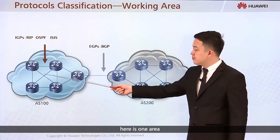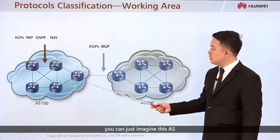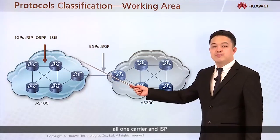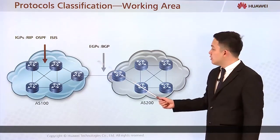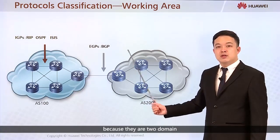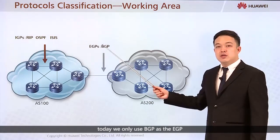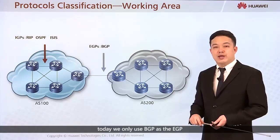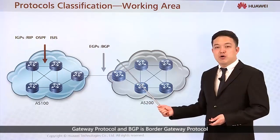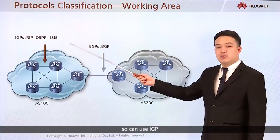Here we have one area — this is Autonomous System 100, and another AS 200. You can imagine each AS is one operator, carrier, or ISP. Between them, because there are two different domains, this is a large scope. Between the large scope, we should use EGP. Today we only use BGP as the EGP — External Gateway Protocol. BGP is Border Gateway Protocol.